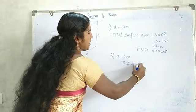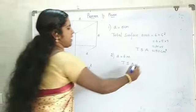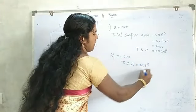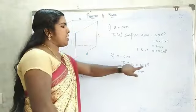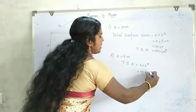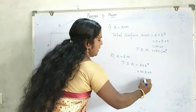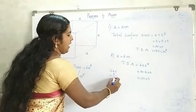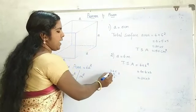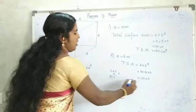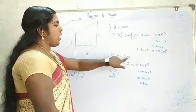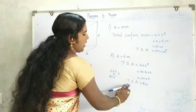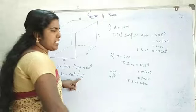Total surface area is equal to 6a². So 6 into a, where the value of a is 6. a² means 6², which equals 6 into 6, giving us 36. Then we multiply 36 into 6: 6 times 6 is 36, carry 3; 6 times 3 is 18, plus 3 is 21. That equals 216. The unit is metre, therefore metre square. TSA equals 216 metre square.